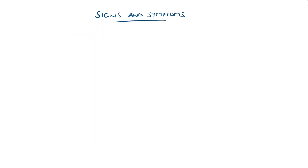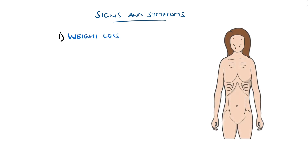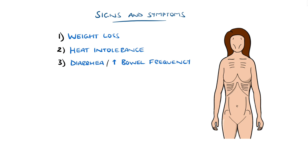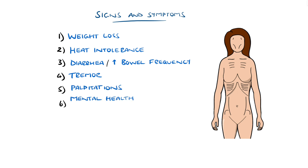Symptoms of excess thyroid hormone generally follow the theme of speeding up. This can include weight loss, heat intolerance, diarrhoea or increased bowel movement frequency, tremor, palpitations, and mental health changes, particularly anxiety and irritability.